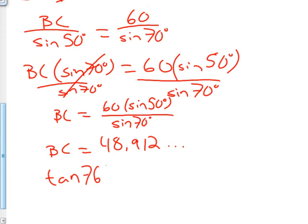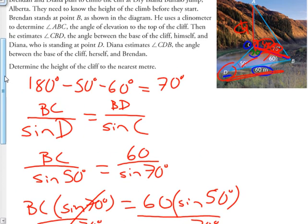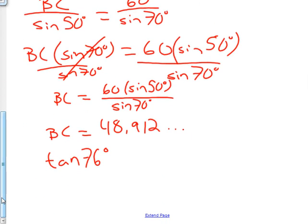So tan 76 degrees, right, because that was this angle right here, tan of 76 degrees is equal to my height h over my side length that I just found, 48.912.